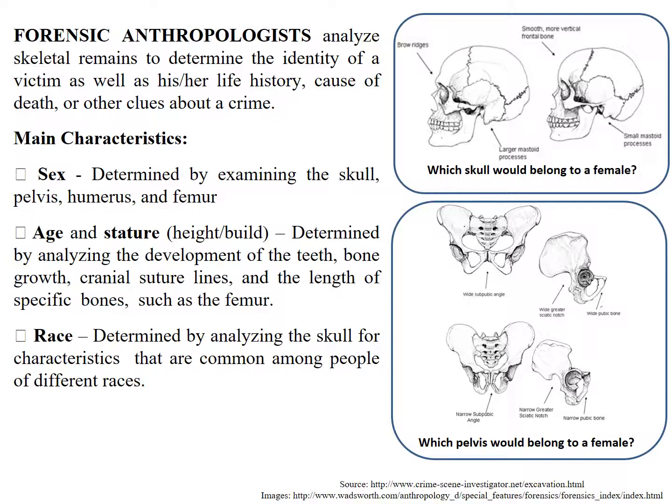They can determine age and stature by looking at your teeth, your bone growth, and your cranial suture lines. When you're born, you have multiple bones in your skull and they come together to form one skull — the lines between the old plates are called cranial suture lines. They also look at the length of specific bones, such as the femur, to determine age and stature.